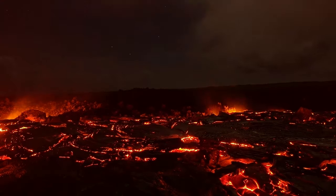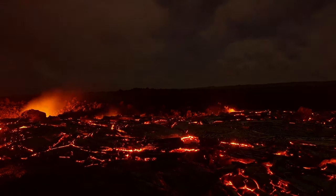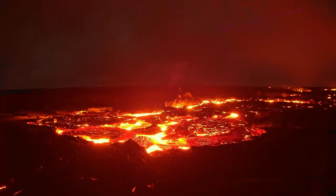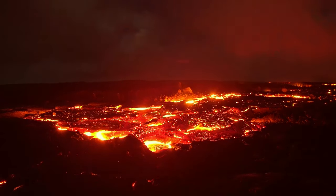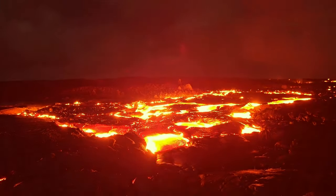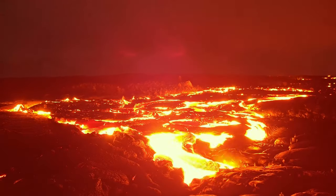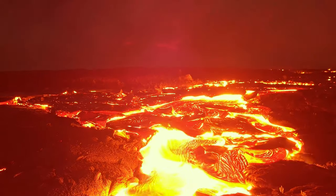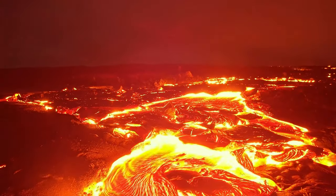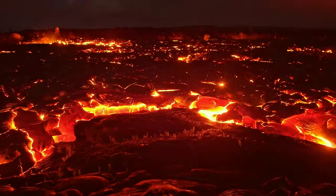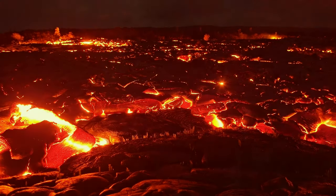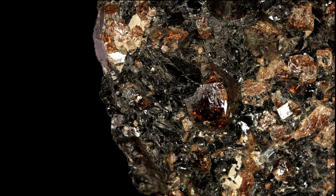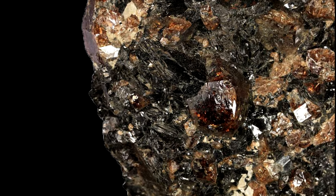A zircon mineral grain forms when it first cools from its liquid temperature to a solid, much like liquid water at its freezing point. This is called its trapping temperature because it traps elements like uranium and pushes out elements like lead. This makes it excellent for uranium dating purposes, effectively setting the uranium-lead clock to zero. Lead atoms created by uranium decay are then trapped in the crystal and build up in concentrations over time.